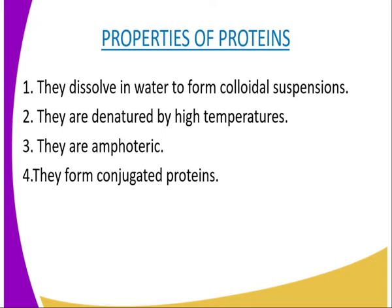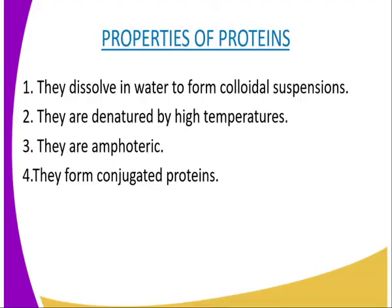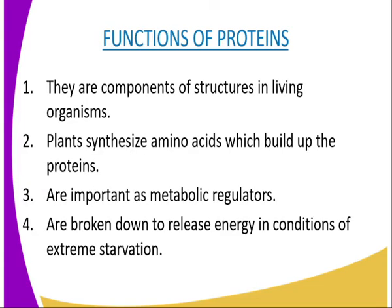The third property of proteins is that they are amphoteric, meaning they have both acidic and basic properties, and therefore react with both acids and bases. The fourth property is that they form conjugated proteins. Because they react with both acids and bases, they can combine with non-protein compounds to form conjugated proteins. For example, in mucus the non-protein compound is a carbohydrate, while in hemoglobin the non-protein compound is iron.